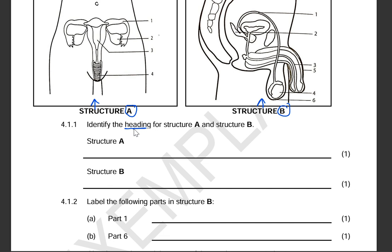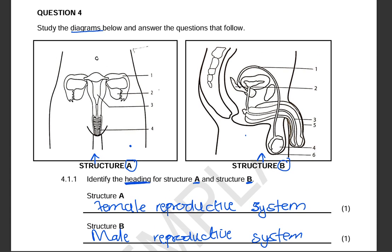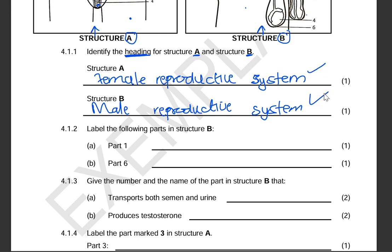The first question asks you to identify the heading for structure A and structure B. Structure A's heading would be the female reproductive system, and structure B would obviously be the male reproductive system. Remember, it has nothing to do with the vagina and the penis — it's a system that involves a number of structures working together. A vagina is just one part, so you can't say the whole structure is showing a vagina, and the penis is just one organ within the male reproductive system. That is very important to get your marks.